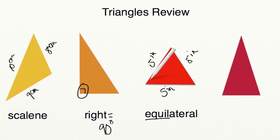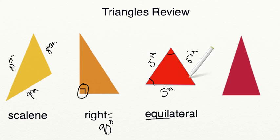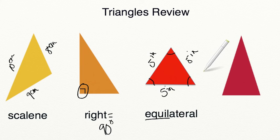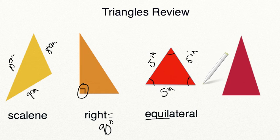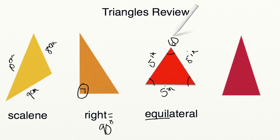Likewise, each of our angles would have to have the same measurement. And since all three angles have to equal 180 degrees in a triangle, that means that the angles on an equilateral triangle will always be 60 degree angles.